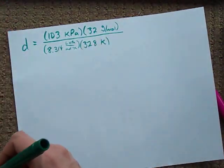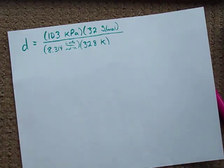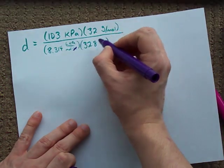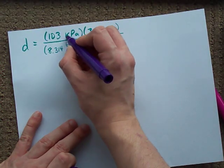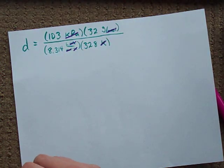And all of these units should cancel out to give me a density unit. Kelvin cancels with Kelvin, per moles cancels with per moles, kilopascals cancels with kilopascals, and I'm left with grams per liter.